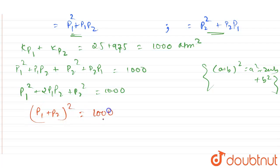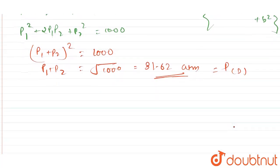From this, you can easily write that P1 plus P2 value is equal to the square root of 1000, which comes out to be 31.62 atm. Now you got the value for P1 plus P2, that is the partial pressure of D gas.